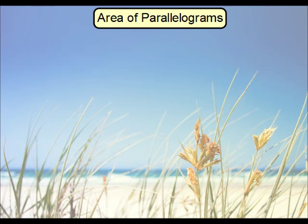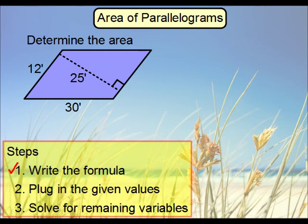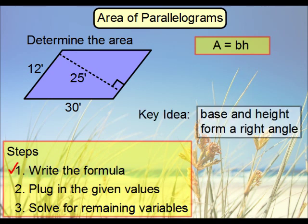How about another example? Let's say we were to determine the area of this figure. As before, we want to write our formula first. Now, let's plug in our given values. Recall that it is the right angle we want to focus on. That tells us where our base and our height are. So, if our right angle is here, that means this length and this length are the base and the height.